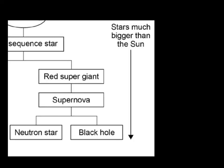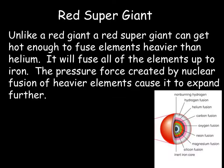Now we'll look at what happens to stars much bigger than our sun. Main sequence stars will become red supergiants, go through a supernova, and then become either a neutron star or a black hole. Unlike a red giant, a red supergiant can get hot enough to fuse elements heavier than helium — it will fuse all elements up to iron. The pressure forces created by nuclear fusion of heavy elements cause it to expand further, with the pressure force becoming greater than gravity. A cross-section of a red supergiant shows it becomes layered, with different layers for neon fusion, oxygen fusion, and so on.